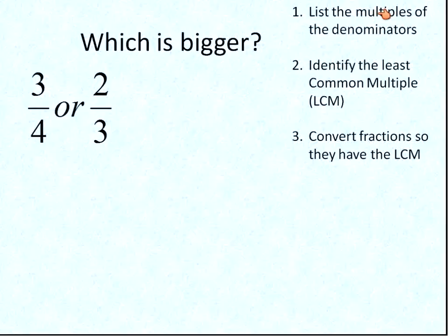So let's go ahead and do that using our three steps. First, we're going to list the multiples of each denominator. So the multiples of 3 are 3, 6, 9, 12, 15, 18. And we can continue, but we're not going to.